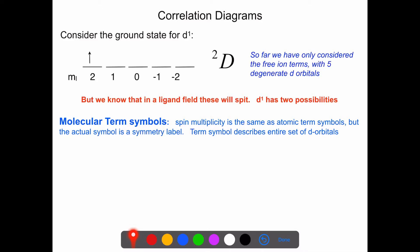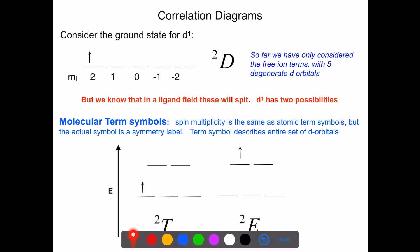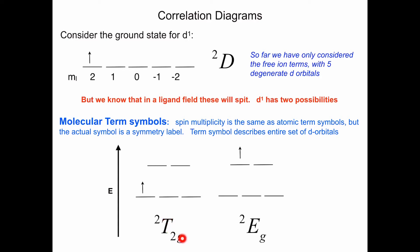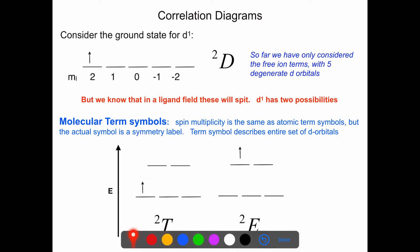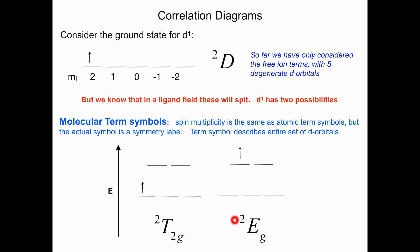Instead of using an atomic term symbol, we have to go to a molecular term symbol. A couple things about these: the spin multiplicity will be conserved. We have a doublet state because we have a single unpaired electron, so our molecular term symbol will also be doublet. The letter D came from our atomic quantum numbers, and in our molecular term symbol, the symbol taking the place of D is actually a symmetry label. For a D1 system, we could put the electron in the T2G slot - this is our ground state - or in the EG slot, which is our excited state. The ground state term symbol is doublet T2G, and our excited state is doublet EG.